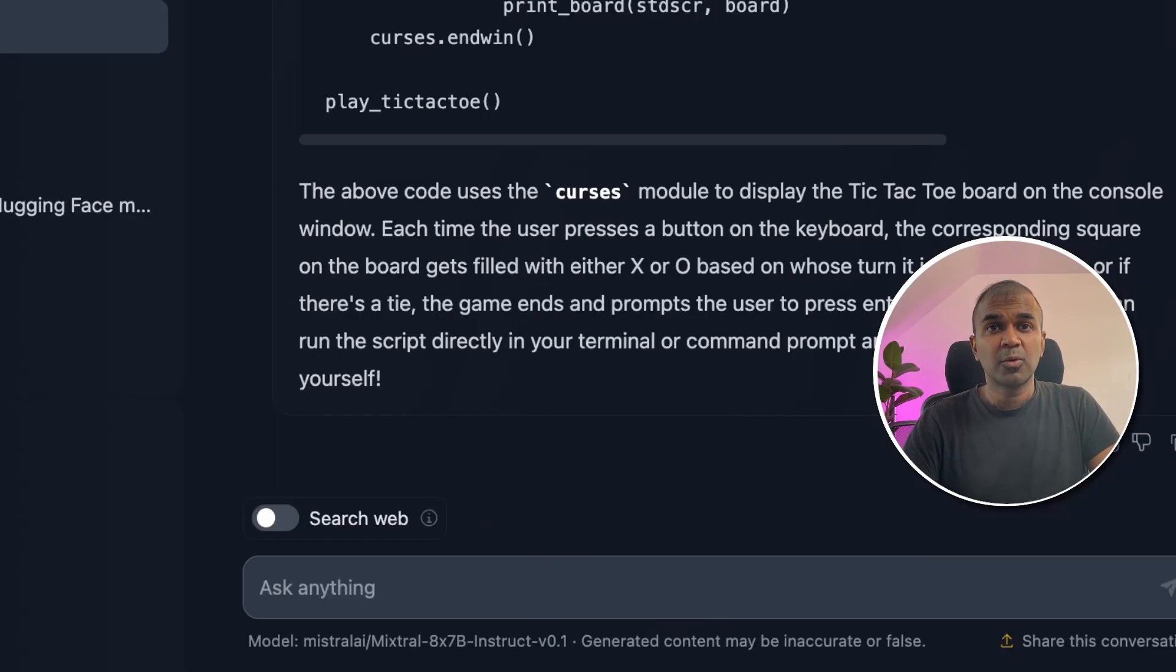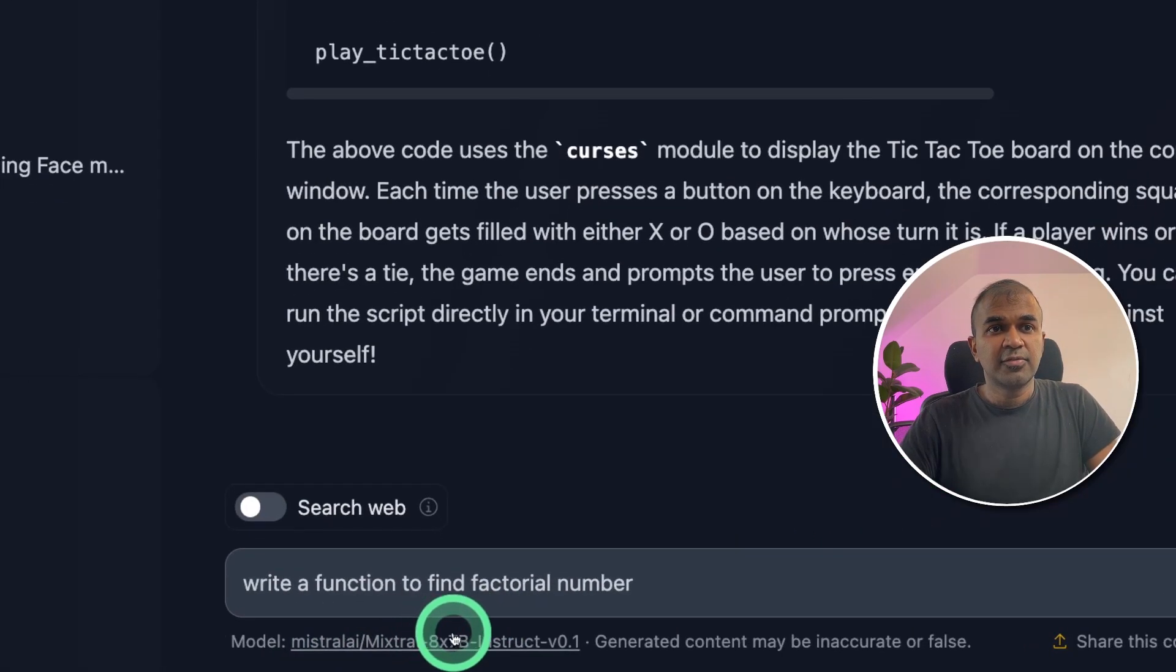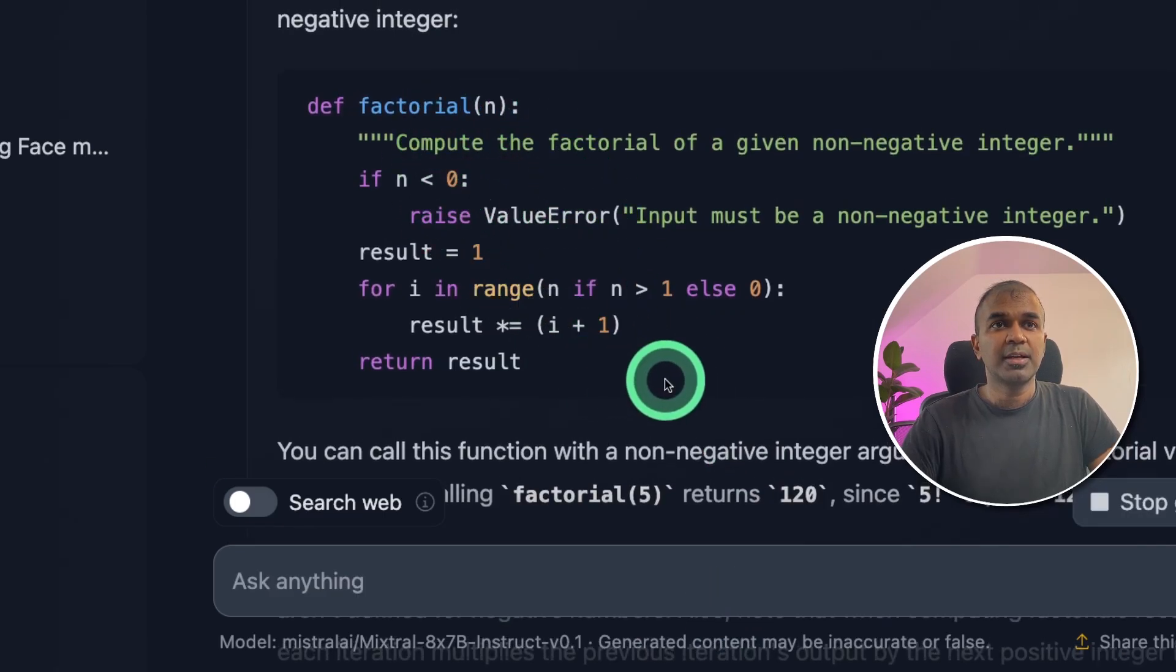Going to ask some simple question. Write a function to find factorial number. Yeah, the code got generated and it seems to be a right answer. So this is a pass.